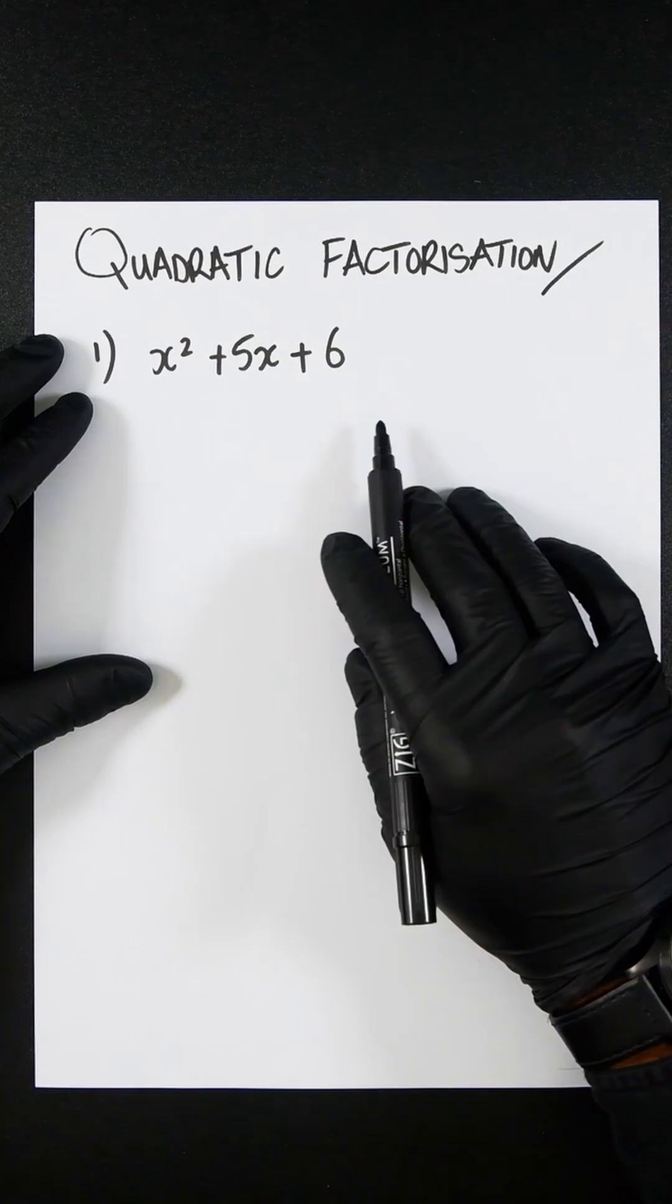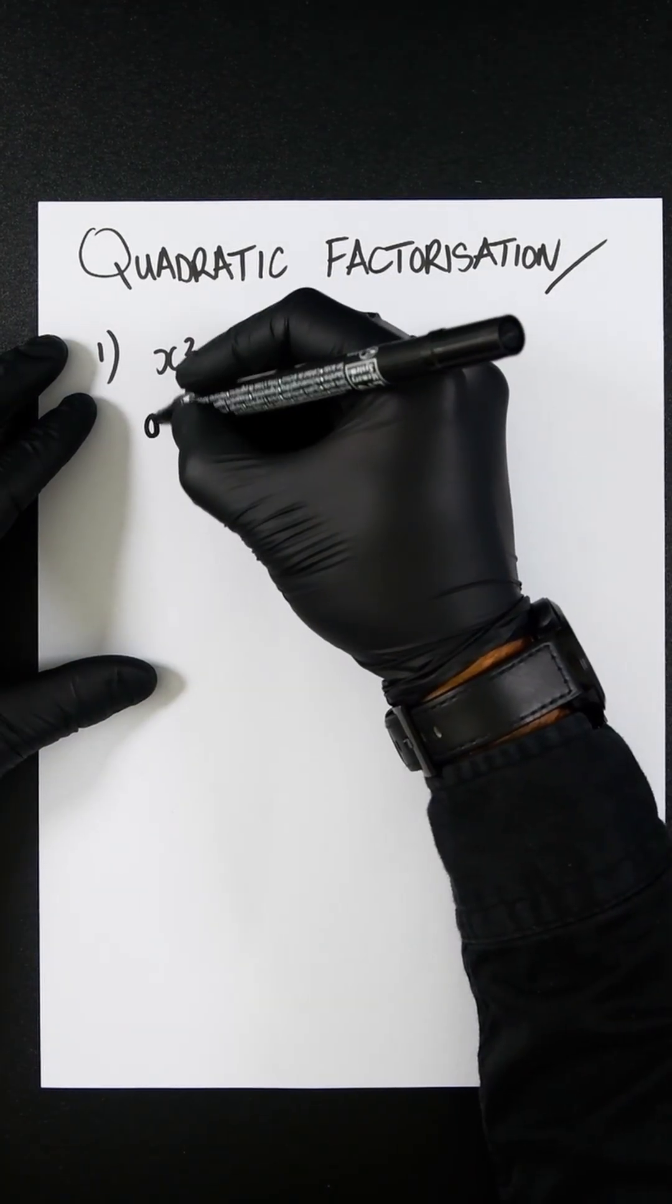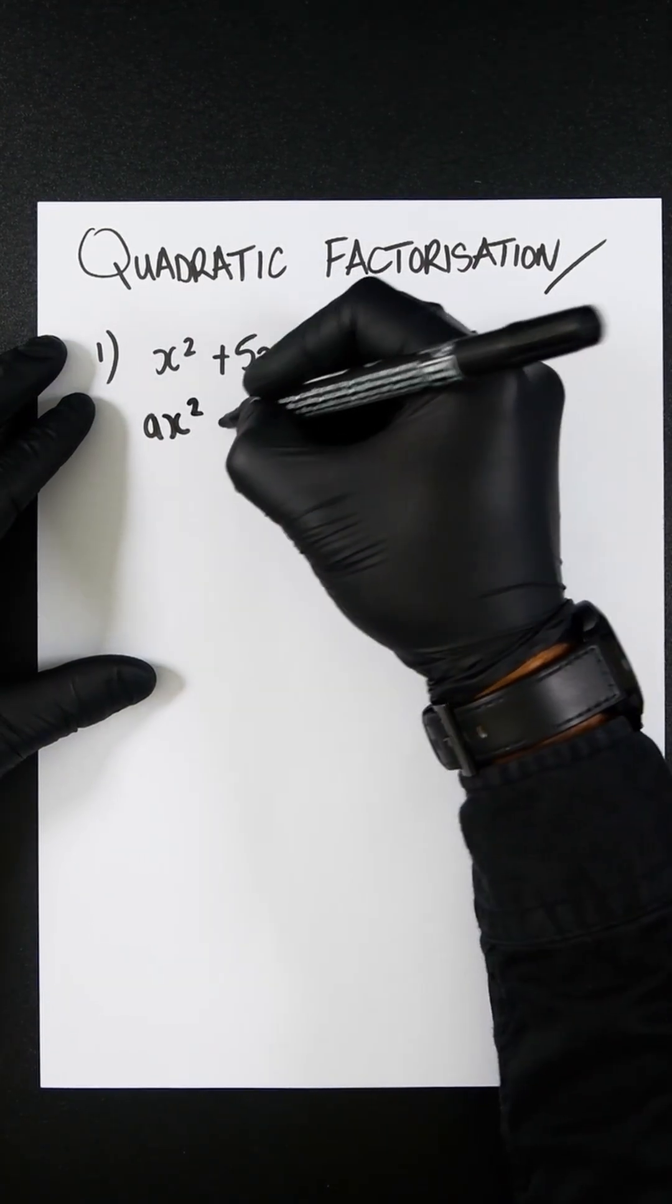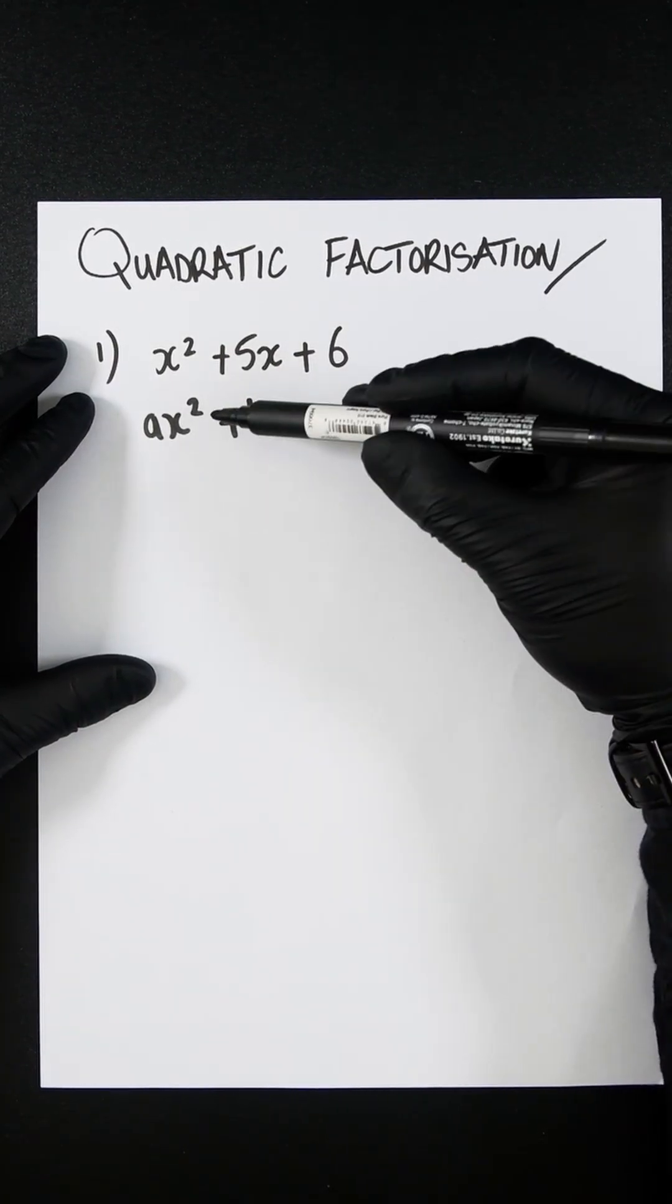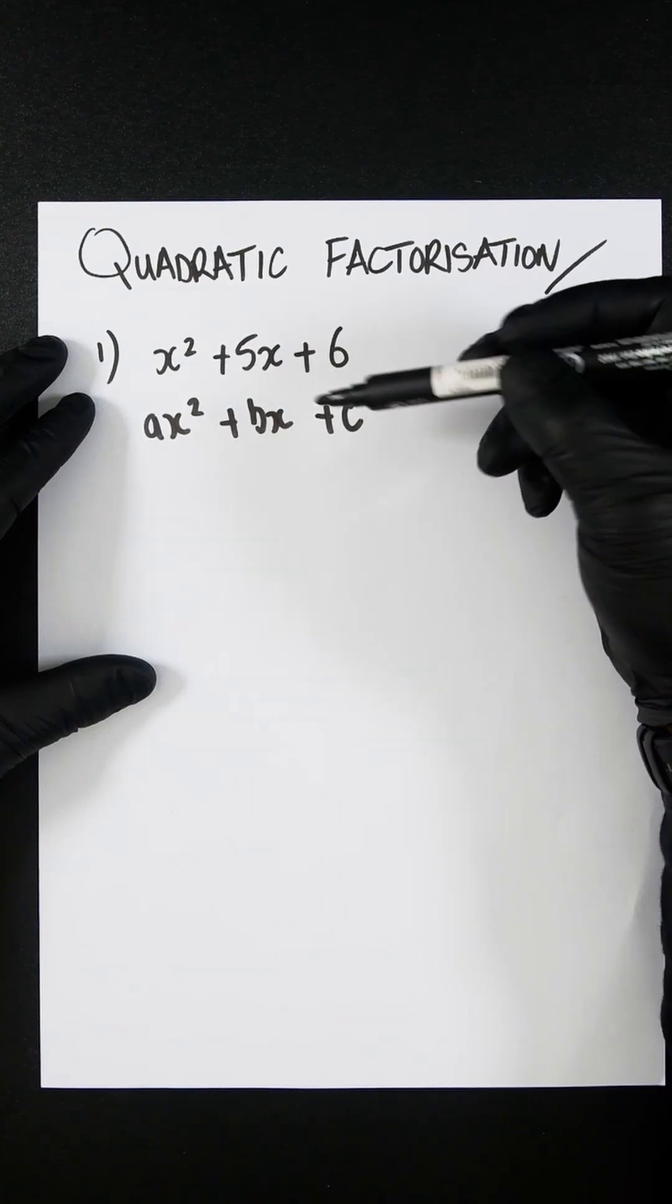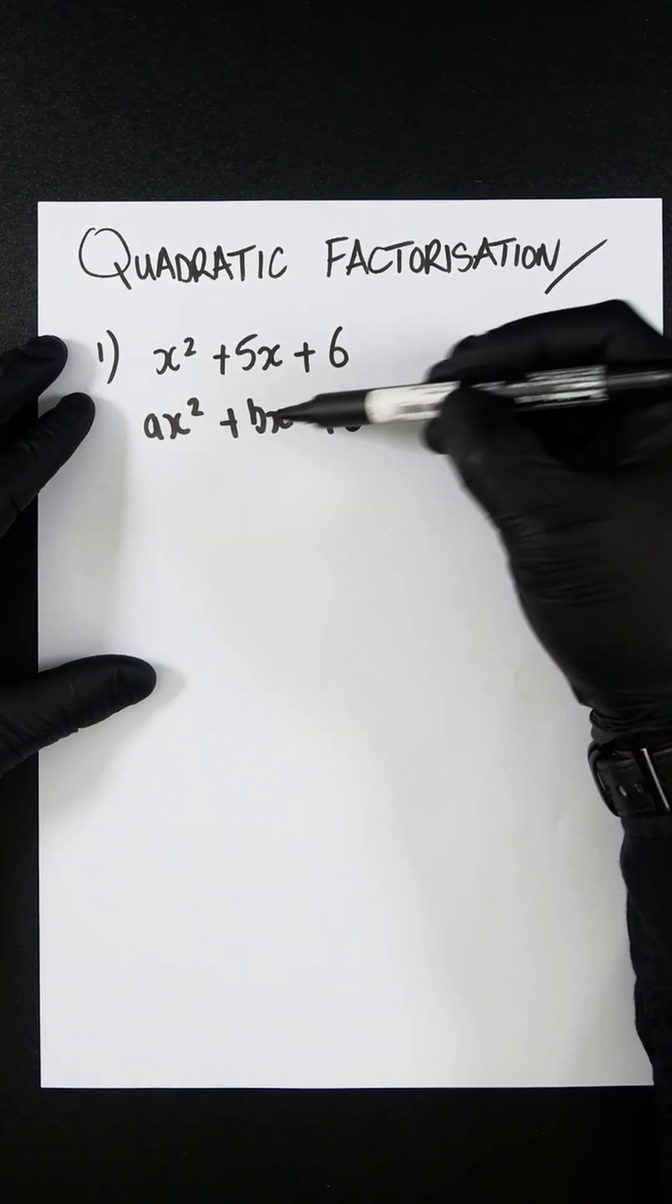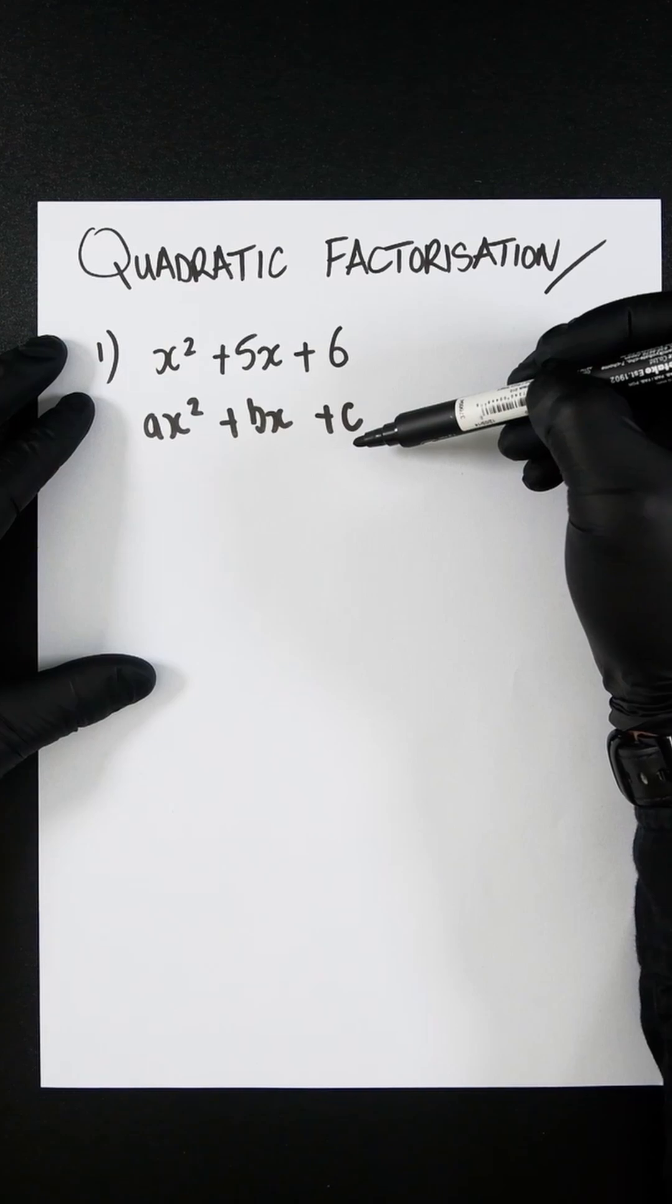This is represented in the form ax² + bx + c, where the x terms are the variables and the letters are called the coefficients, or just numbers.